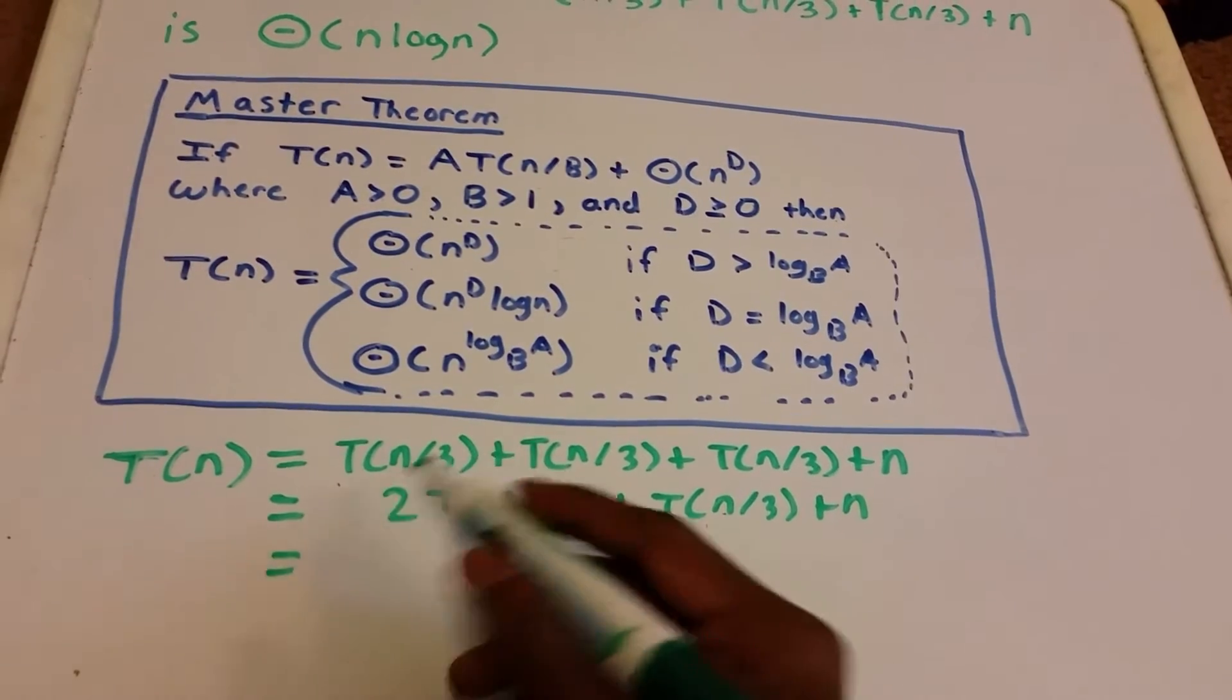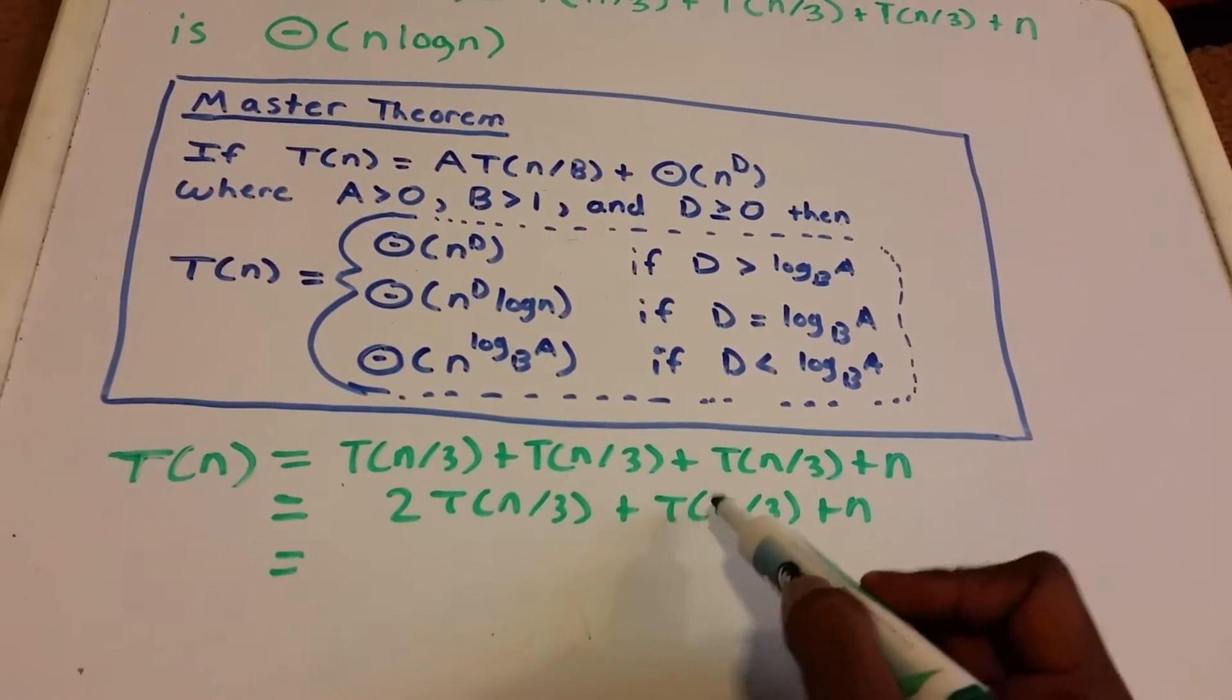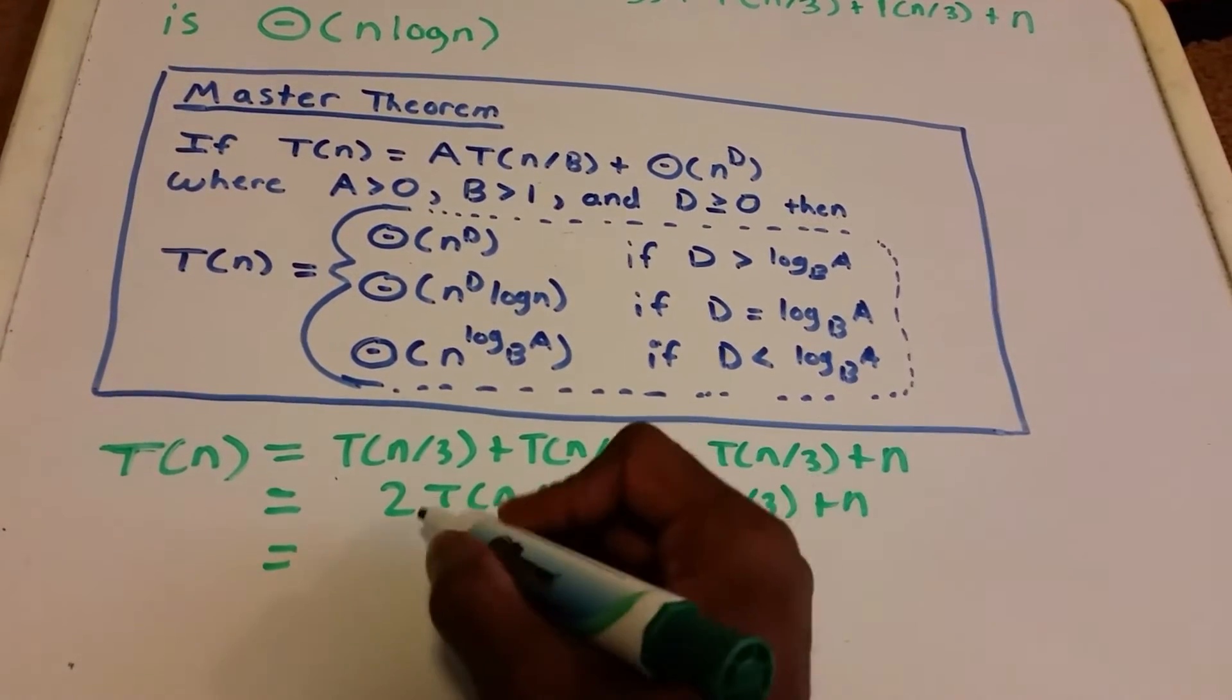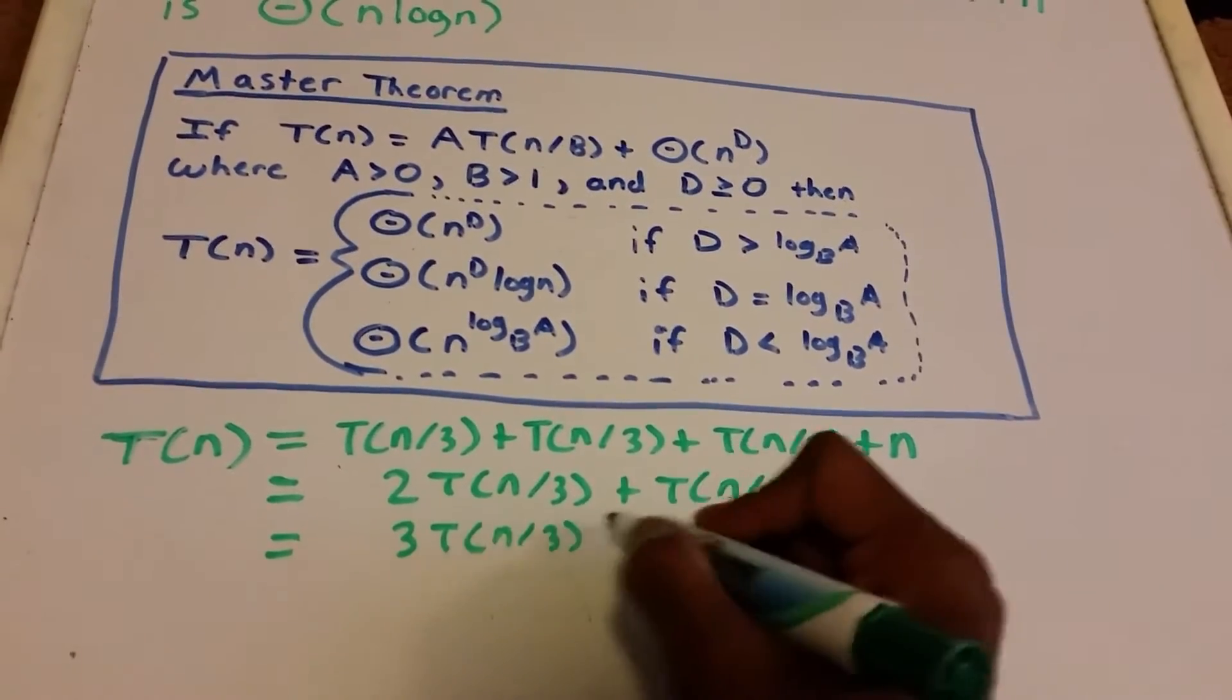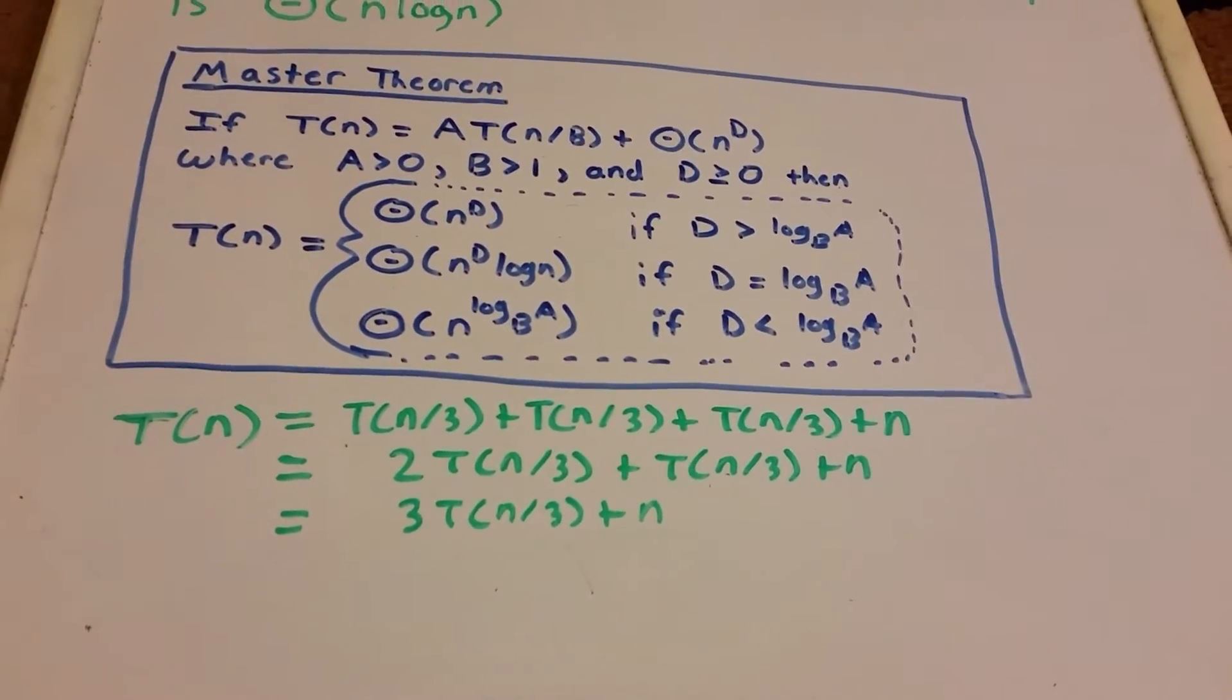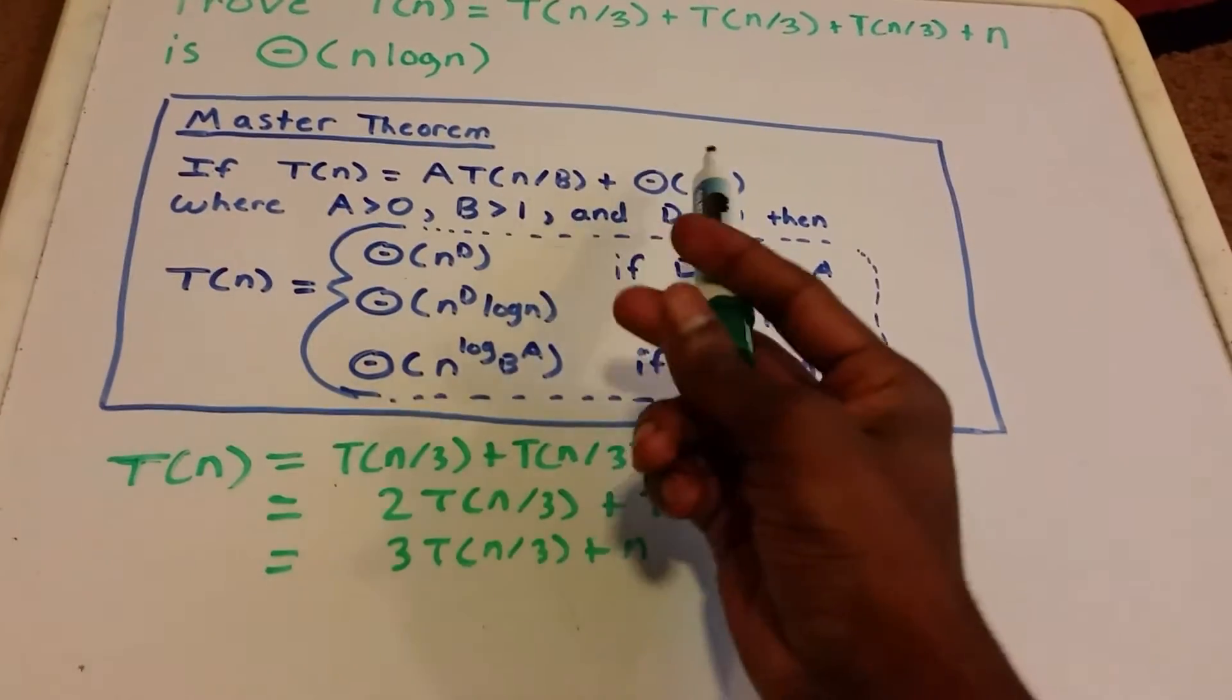We can do the same thing again, adding these T(n/3) terms together to get 3·T(n/3) + n. Now it's looking much more like our recurrence form.